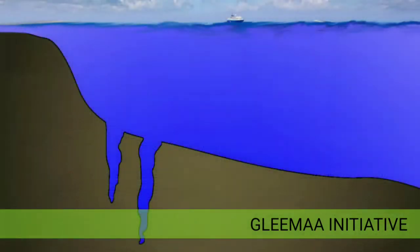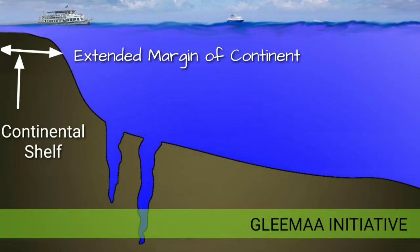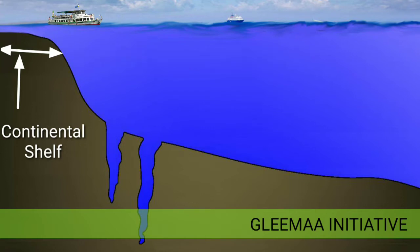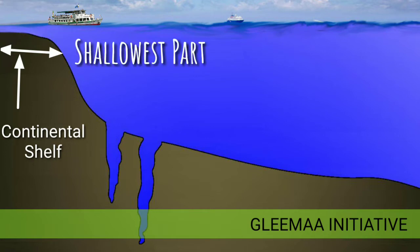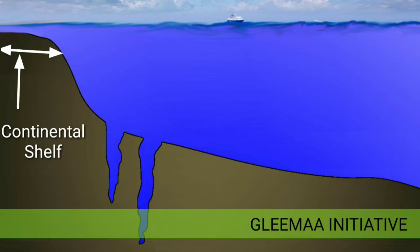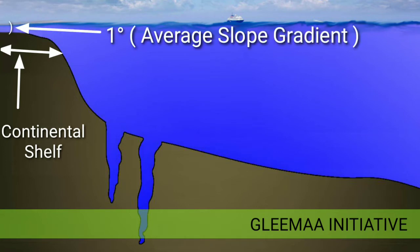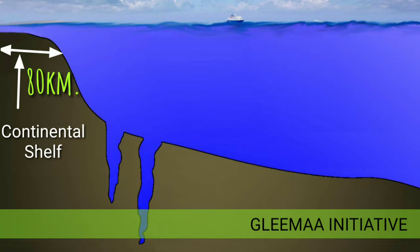The Continental Shelf is the extended margin of each continent occupied by relatively shallow seas and gulfs. It is the shallowest part of the ocean, having an average gradient of 1 degree or even less. The average width of the Continental Shelf is about 80 km.